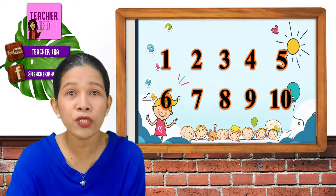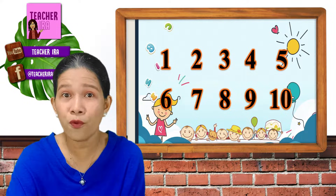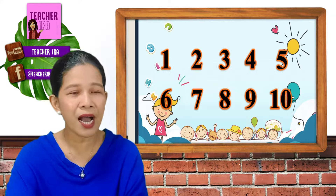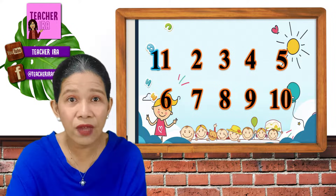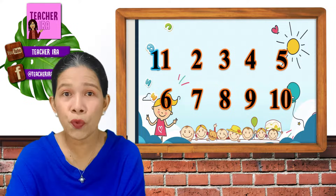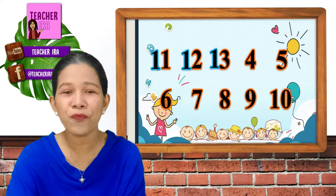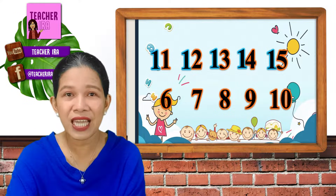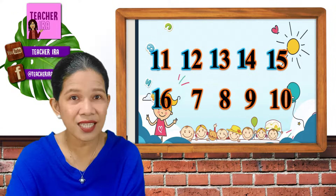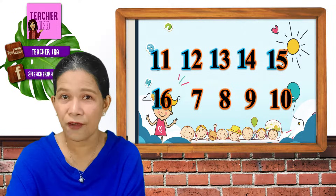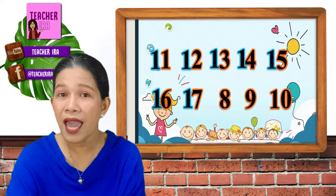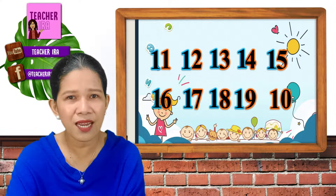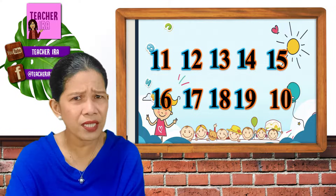Here, we're going to add 1 in front, and it will now become 11, 12, 13, 14, 15, 16, 17, 18, 19, and 20.